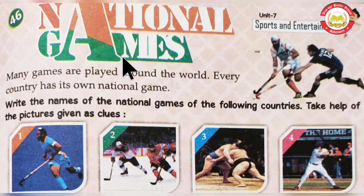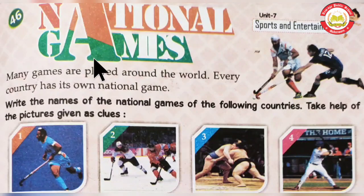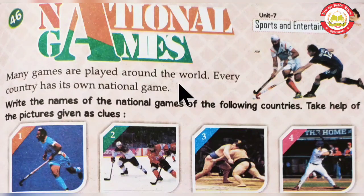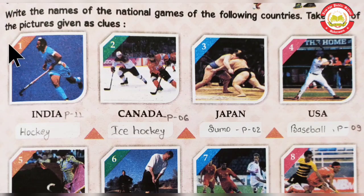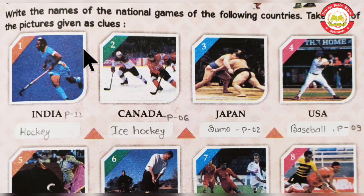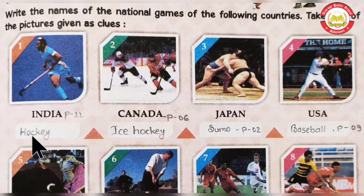In this chapter we discuss about different nations which have different national games. Many games are played around the world and every country has its own national game. Write the names of the national games of the following countries. Here we have some pictures of the games provided — take help of the pictures given as clues. The first game belongs to India: India's national game is Hockey.